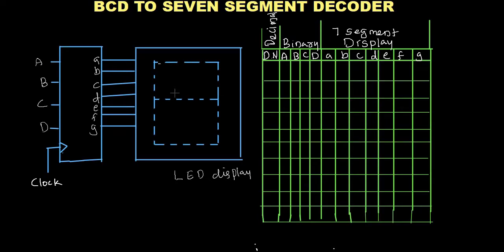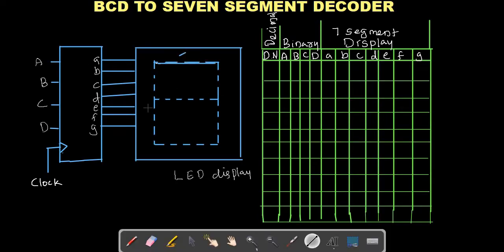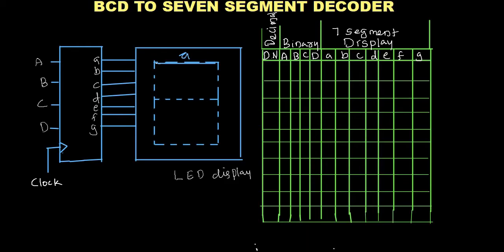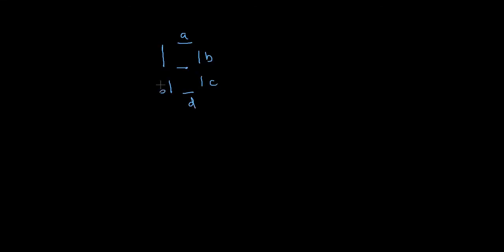This is segment A, this is segment B, this is segment C, this is segment D, this is segment E, this is segment F, and this is segment G. This is the 7-segment display, and each segment is labeled A, B, C, D, E, F, and G.